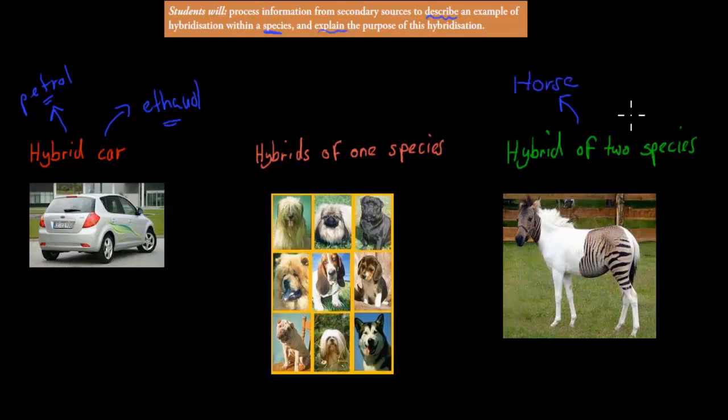So if a horse has offspring with a zebra, then you produce this infertile zebra horse. There is actually a name, I forgot the name for it, but this here would be the offspring, the hybrid of both the horse and the zebra. But the actual dot point is asking us for within a species.